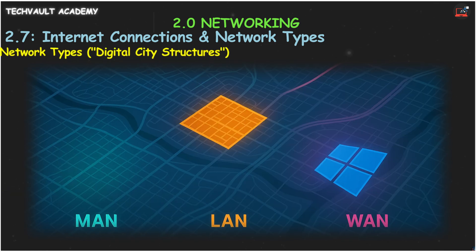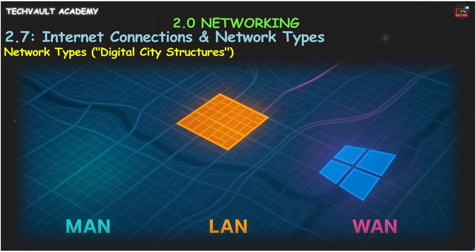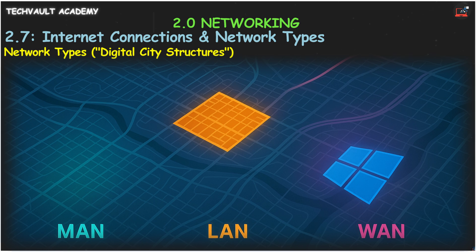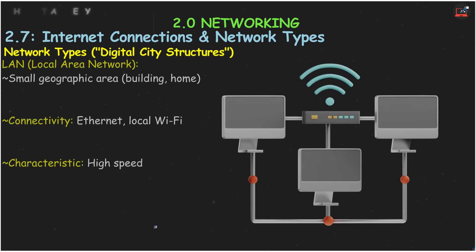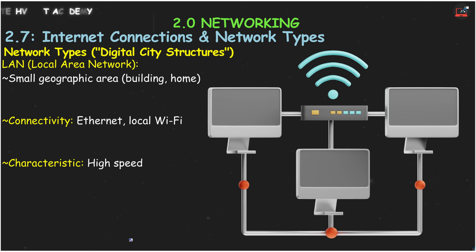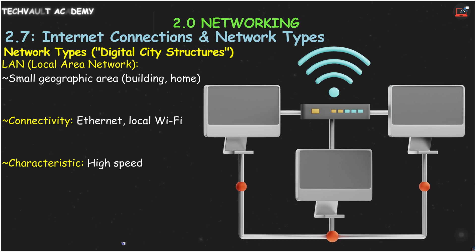Now let's switch to network types — how our digital cities are organized. A LAN, Local Area Network, is a network in a small area like your home, an office floor, or a small building. It uses Ethernet or local Wi-Fi, and usually offers the fastest speeds because devices are close together.